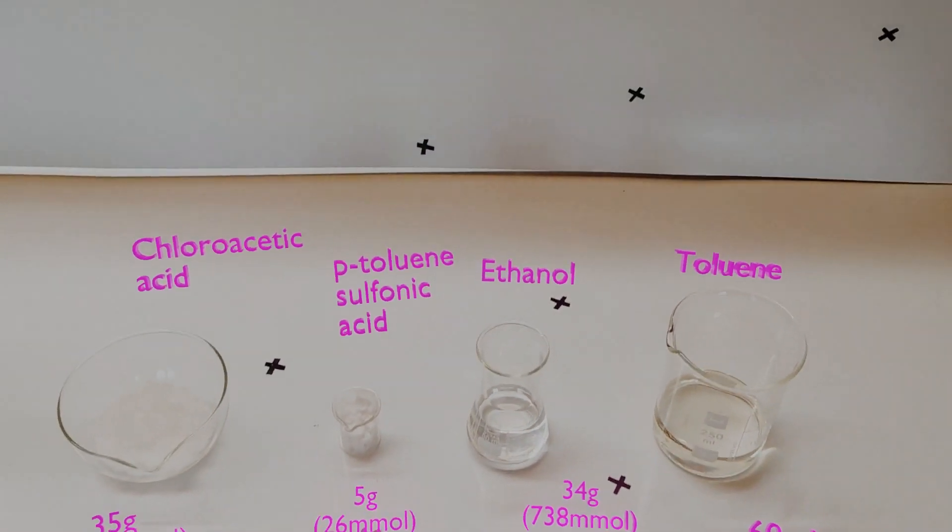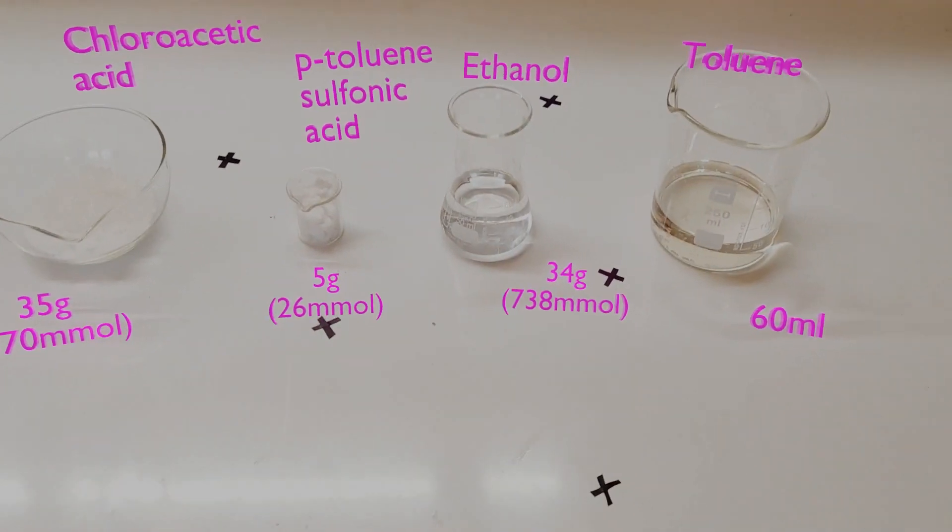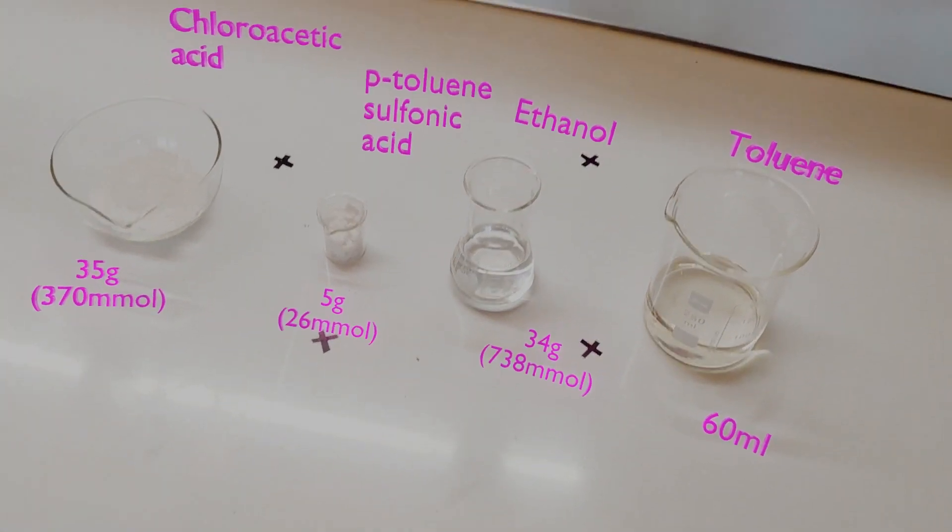For this reaction, we will be reacting chloroacetic acid and ethanol with para-toluene sulfonic acid as the catalyst and toluene as the solvent. We begin by adding all the reagents into the reaction flask.